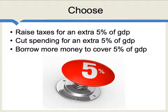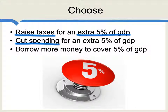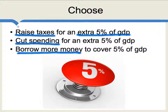The country needs to come up with about an extra 5% of GDP. What are the options? One is to raise taxes. Another is to cut spending. Of course, there's always a third option — to borrow more money — but that's just going to postpone the basic problems. So we'll focus on raising taxes and cutting spending.